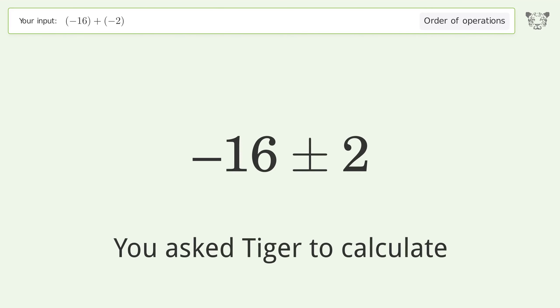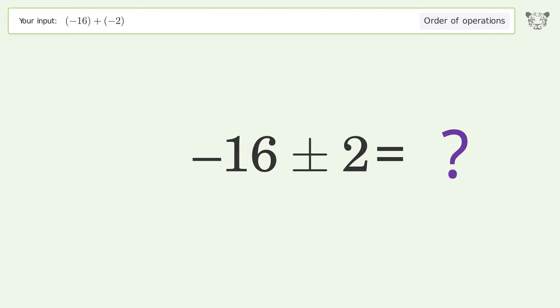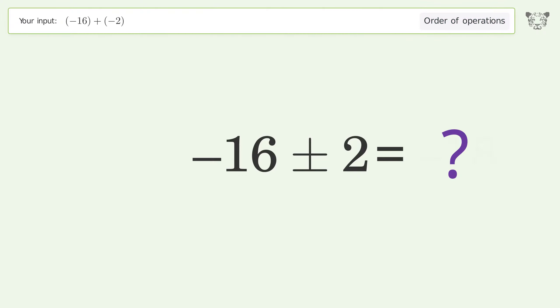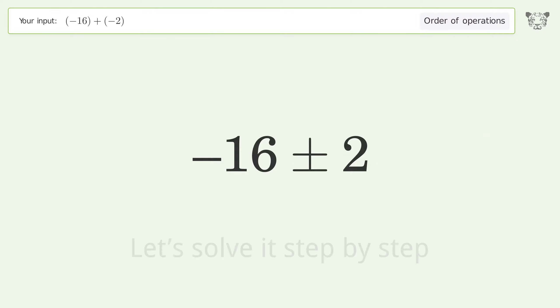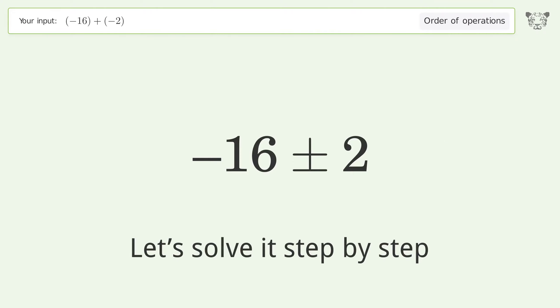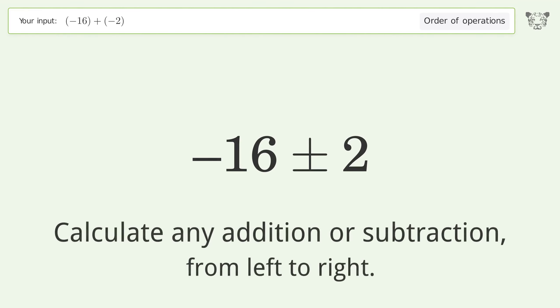You asked Tiger to calculate. This deals with the order of operations. The final result is negative 18. Let's solve it step by step.